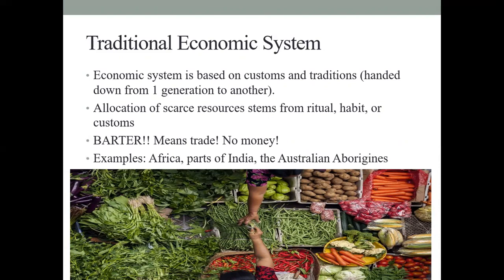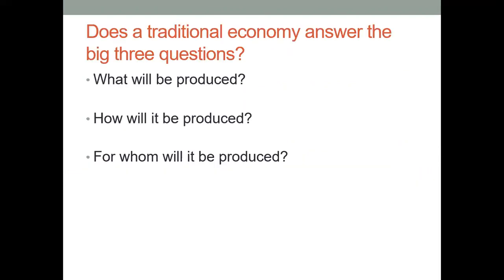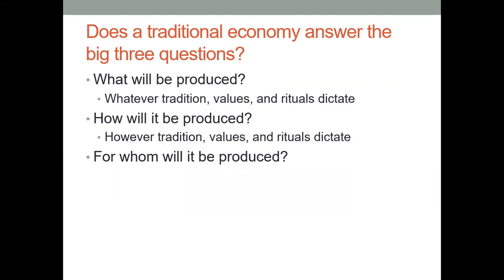There are different places that depend on barter trading, such as parts of Africa, India, and Australia. In the traditional economic system, what is produced is based on values and ritual dictation. How it is produced is guided by those values and religious aspects. For whom it is produced is determined by traditions and values — customs and tradition are the main directors for answering these three questions.